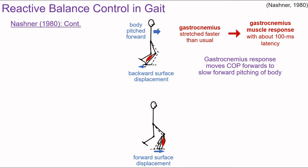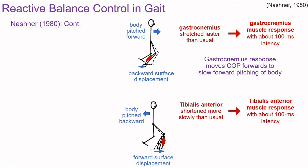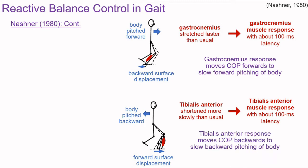In this next situation, when the participant steps on the platform, the platform is translated anteriorly, pitching the body backwards. The planted foot is pulled forward, so the tibialis anterior shortens more slowly than it usually would — more slowly compared to how it would shorten if the foot were not sliding out from beneath you. The response to this slowed shortening is activation of the tibialis anterior with a latency of about 100 milliseconds, moving the center of pressure backwards to slow the backward pitching of the body.